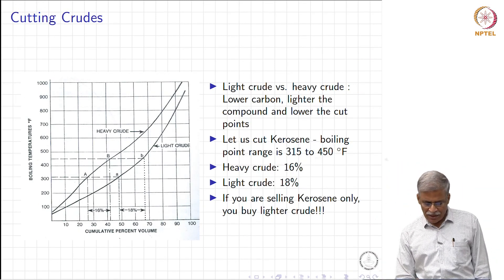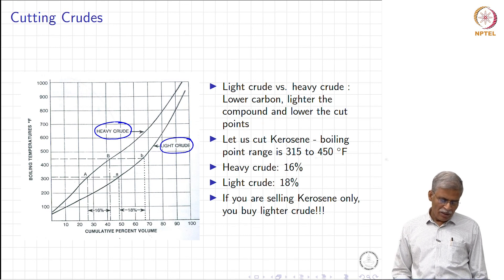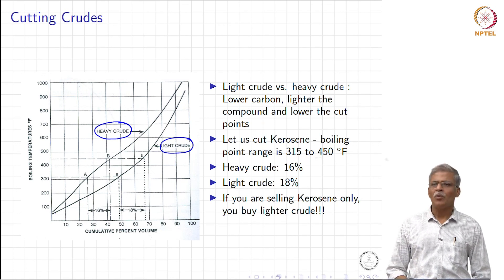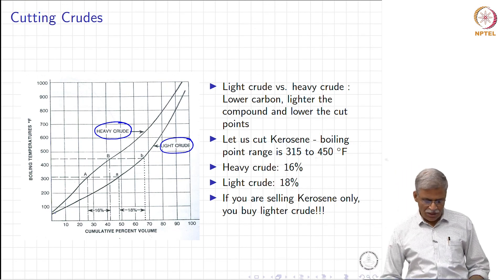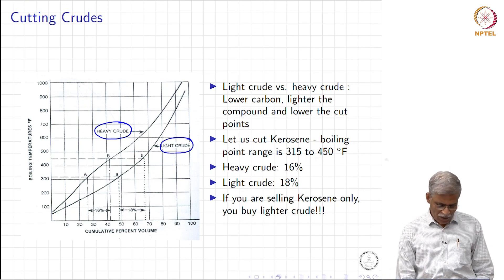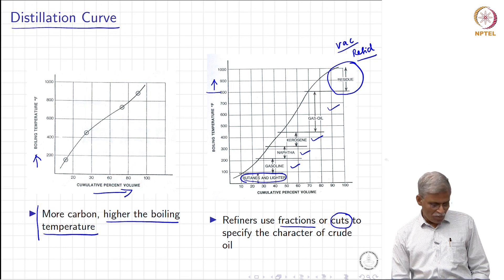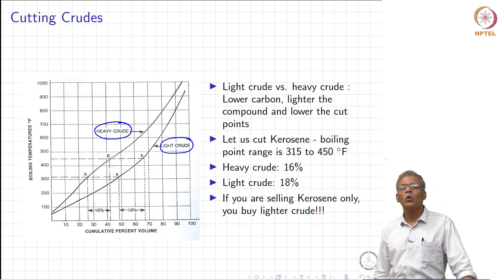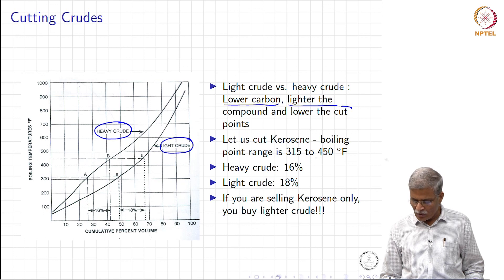Let us take two examples: a light crude and a heavy crude. These are two different crudes, and when we start boiling them and capture the constituents to draw the distillation curve, we get something different. As we discussed, if there is more carbon, the boiling temperature is going to be much higher. Looking at the heavy crude versus the light crude, a lighter compound has lower carbon content. The refinery terminology we need to understand here is called the 'cut point.'